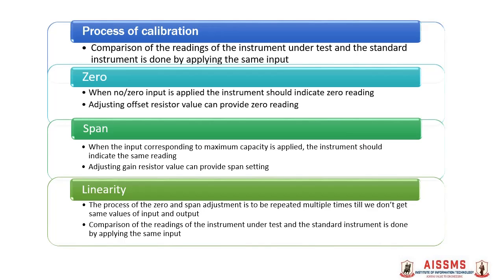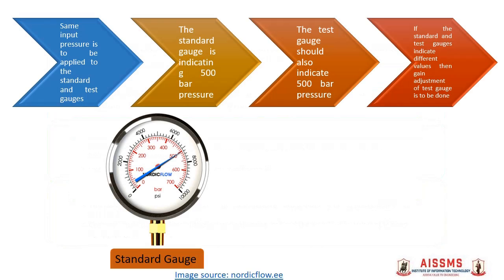Then we say that the process of calibration is complete and the instrument is ready to measure any unknown input applied to it. Let's take an example of a pressure gauge. We have a standard pressure gauge and a test pressure gauge. The same input pressure is applied to both the standard and test gauges. The standard gauge is indicating 500 bar pressure.